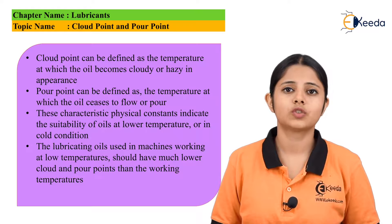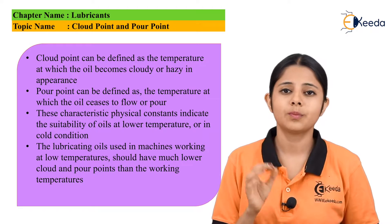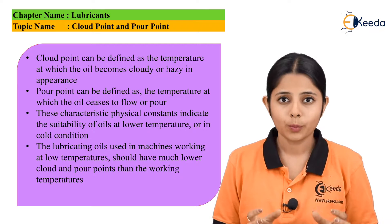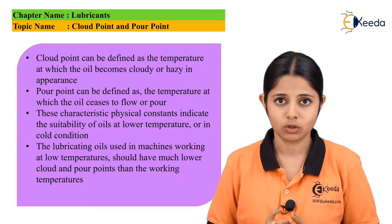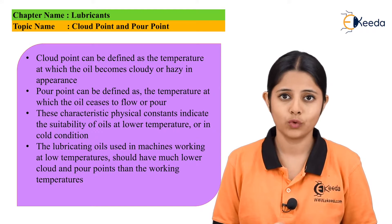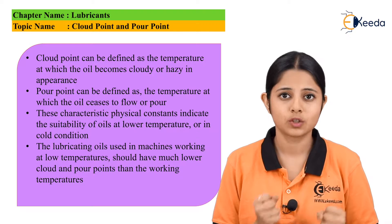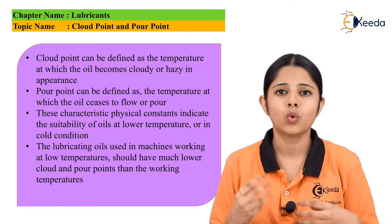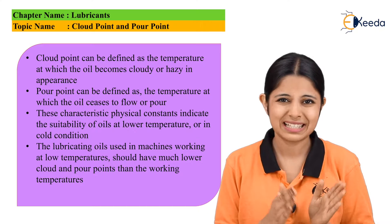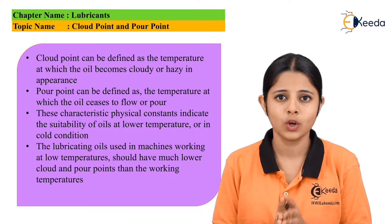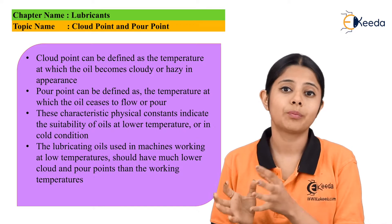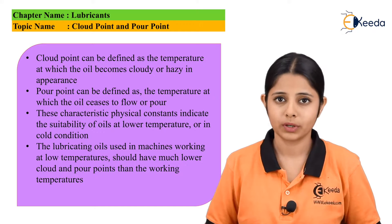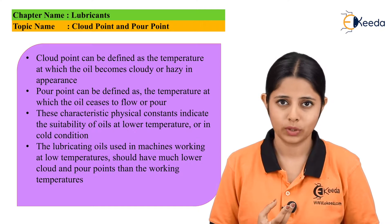The second property we are going to study is the pour point. Pour point is very important. Pour point is that point in temperature where the oil ceases to flow or ceases to pour. That means it is the temperature at which the oil won't flow at all — it has either turned into a semi-solid state or a completely solid state, forgetting all its liquid properties of flowing or pouring.